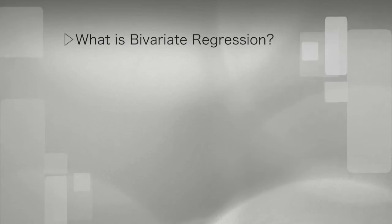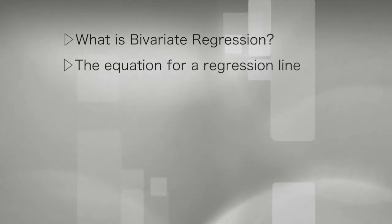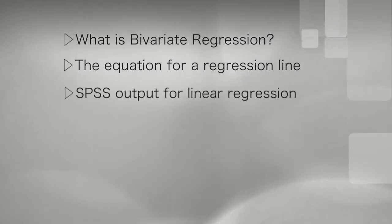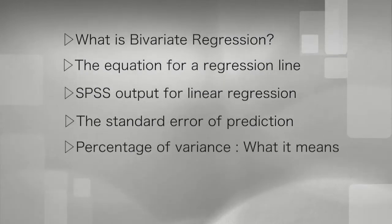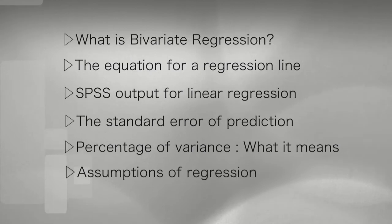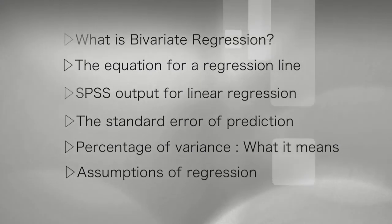Today what I'd like to do is cover off what bivariate regression is, talk about what the equation of a regression line is, explain and go through the SPSS output for a linear regression, explain what the standard error of prediction is, also what the percentage of variance is and what that actually means, and some of the assumptions that sit underneath a bivariate regression.